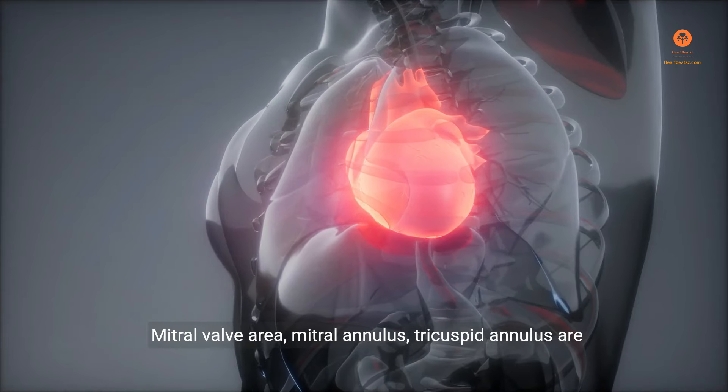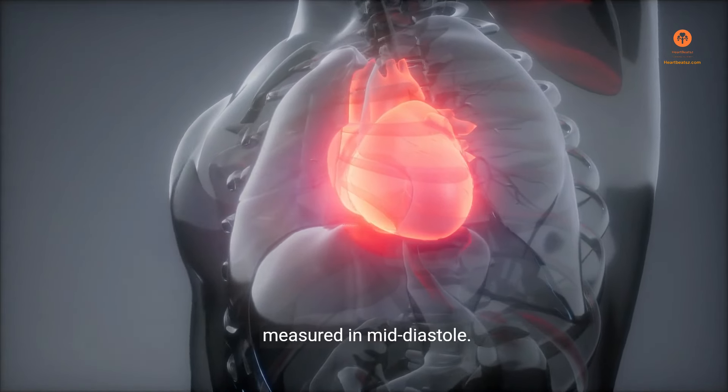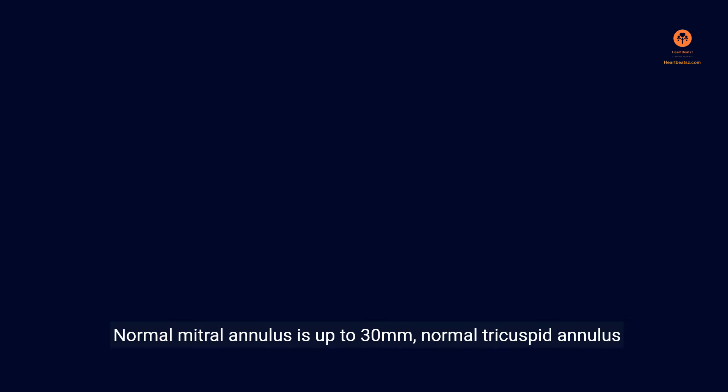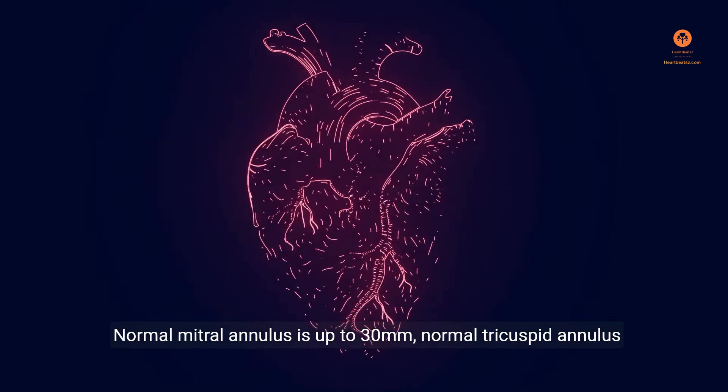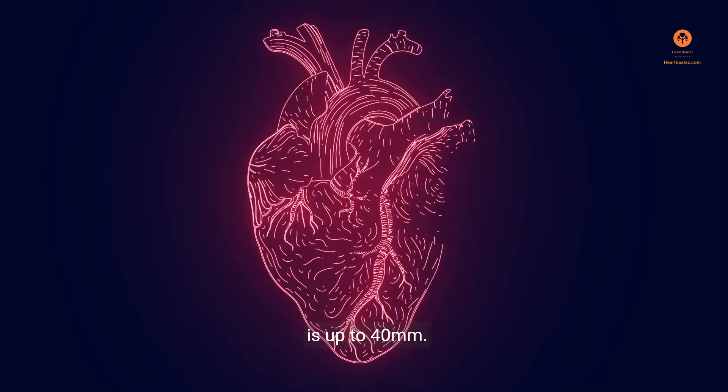Mitral valve area, mitral annulus, and tricuspid annulus are measured in mid-diastole. Normal mitral annulus is up to 30 mm. Normal tricuspid annulus is up to 40 mm.